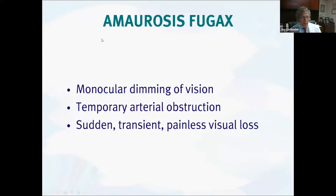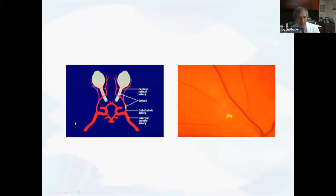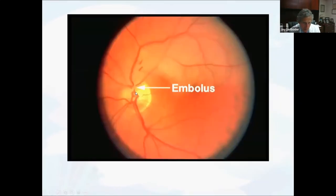In amaurosis, that is a monocular — and that's an important distinction — monocular dimming of the vision due to a temporary obstruction of the arterioles, and it's painless. To refresh everyone's memory about the anatomy, the ophthalmic artery is a branch off of the internal carotid, which ultimately leads to the central retinal artery. We can get emboli in either of those locations. This is a picture of the Hollenhorst plaques — emboli that we can sometimes see in patients who have developed an arterial obstruction.